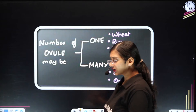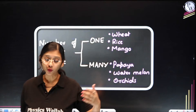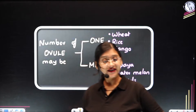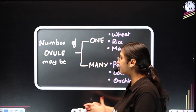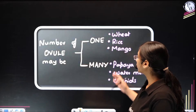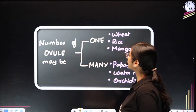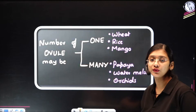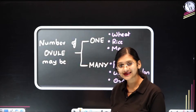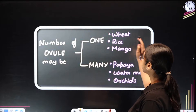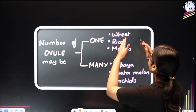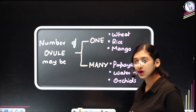So we will be studying regarding ovules in this particular chapter. Different plants will have different numbers of ovules in one flower. So if the flower is going to have just one ovule, they will be able to give rise to one seed. Some of the examples for one ovule would be wheat, rice, and mango.